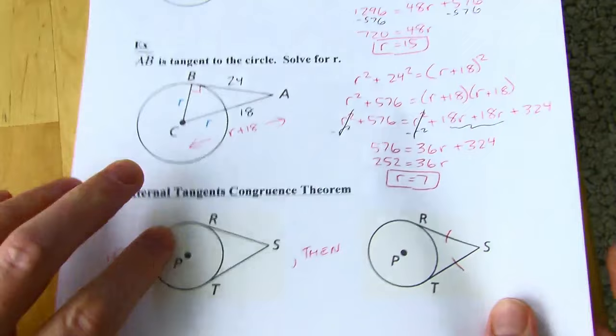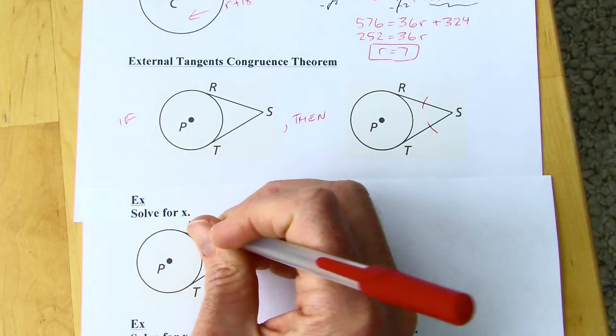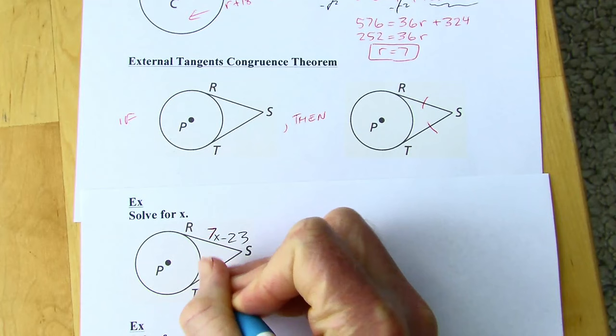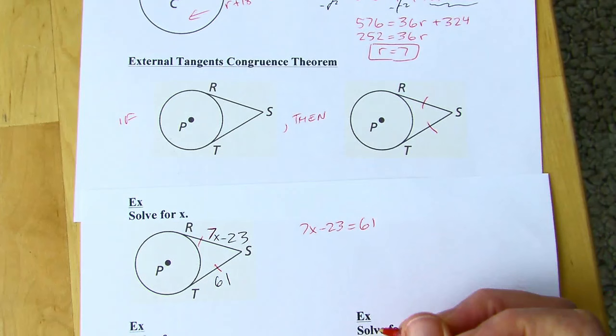Here's a straightforward example. We've got our ice cream cone situation — the two tangent segments are going to be congruent, the sides of the ice cream cone. That means 7x − 23 = 61. I just have to solve for x: add 23, then divide by 7.